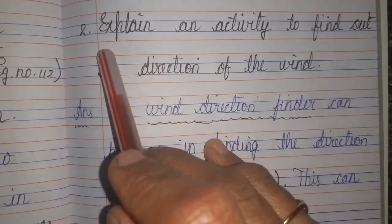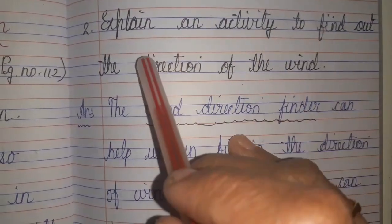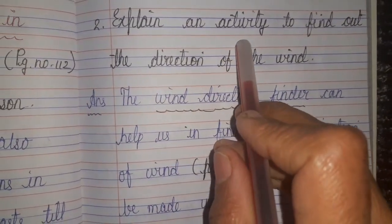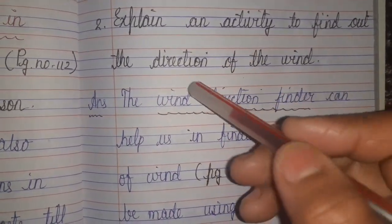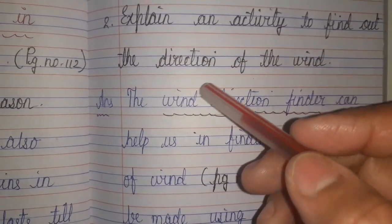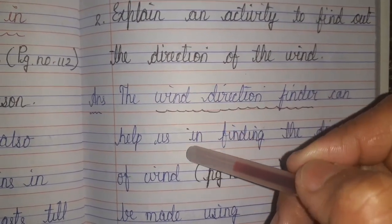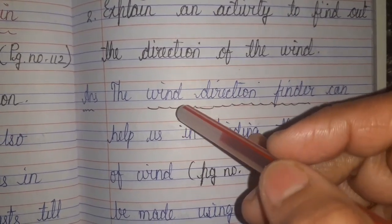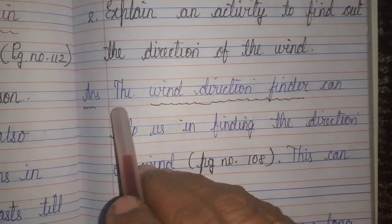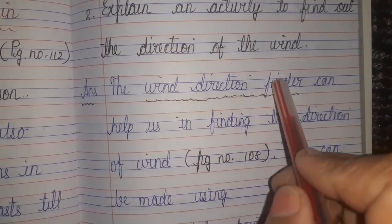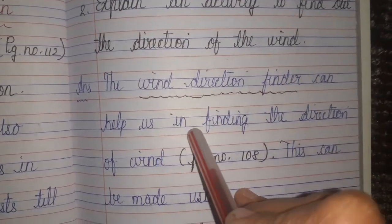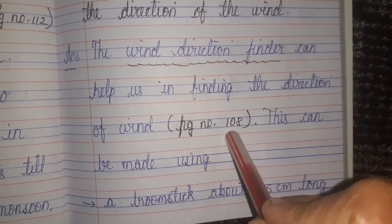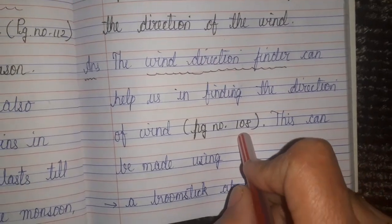Question number two: explain an activity to find out the direction of the wind. We have to perform an activity to find the wind's direction. The wind direction finder can help us. This is given on page number 108 of your textbook.